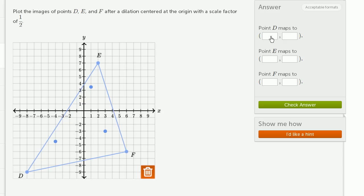So let's write these coordinates. Point D, remember, was at the point negative 8, negative 9. That's going to map to negative 4 and negative 4.5. We're going to take half of each of those.